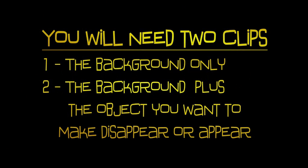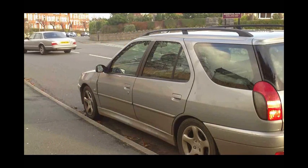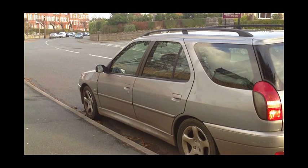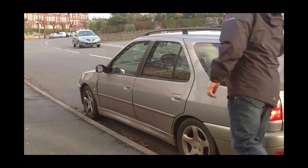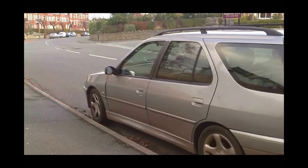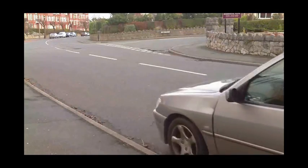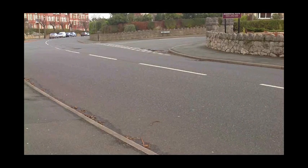You will need two clips to pull off this effect: a shot of the background only, and a shot of the background plus whatever it is that you want to disappear. It's safest to take both scenes in one shot so that you don't have to touch the camera between shots. Here's how I did it. I locked down the camera and started recording. I took about 10 seconds of the car and background. Then, leaving the camera running, I moved the car out of shot and got another 10 seconds of just the background. That's it. Job done.